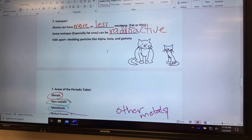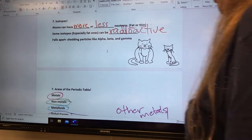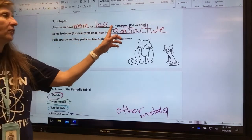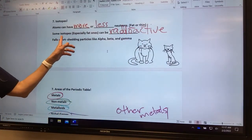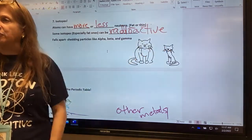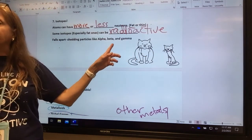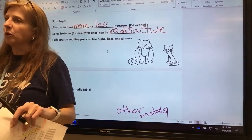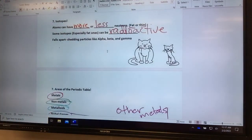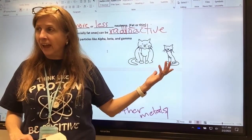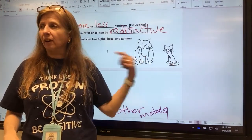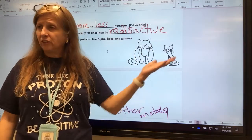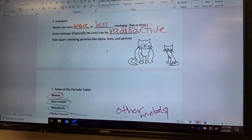Now, isotopes. Ions are charged atoms. Isotopes are fat ones or skinny ones. Atoms can have more or less neutrons. They can be fat or thin. Some isotopes, especially fat ones, can be radioactive. They're so fat, they fall apart. When they fall apart, they shed radioactivity particles like alpha, beta, and gamma. Notice I got two cats. Here, these are our positive cats. One is fat. One is thin. Are they both cats? Yes. So it doesn't change the identity of the atom to be an isotope. It's just how fat they are. How many neutrons they have.